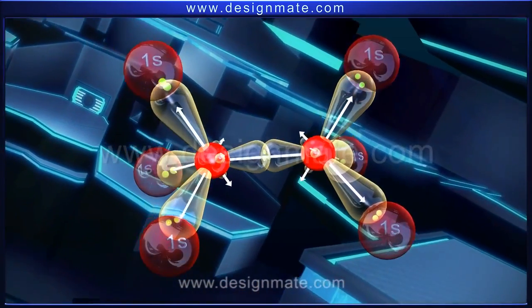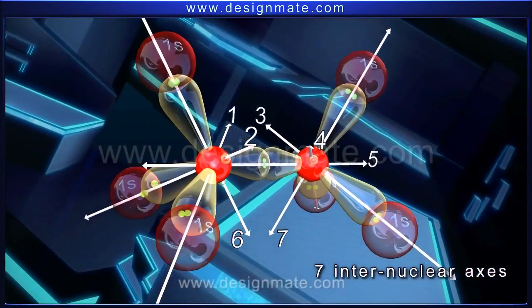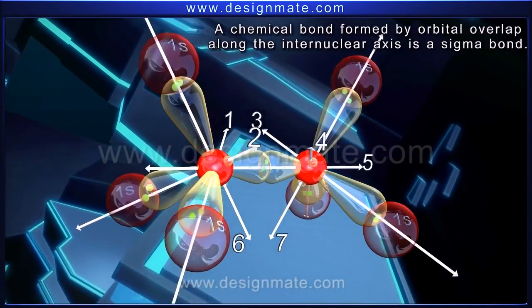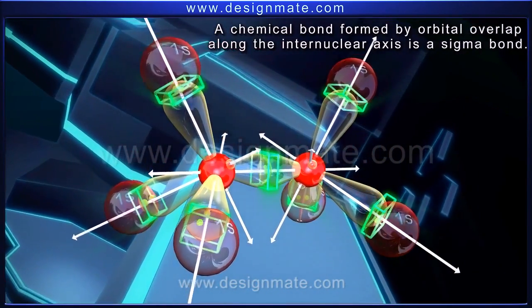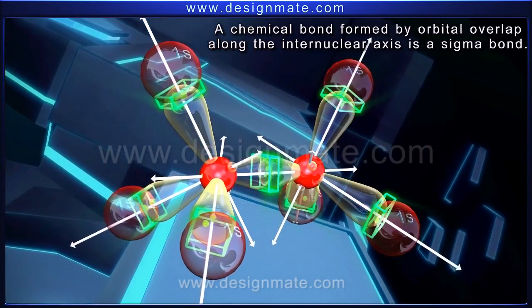We can thus visualize seven internuclear axes between them. A chemical bond formed by orbital overlap along the internuclear axis is a sigma bond.